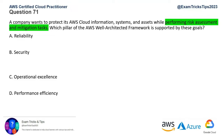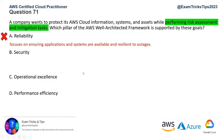Let's go through each option one by one. The first one, reliability - this focuses on ensuring applications and systems are available and resilient to outages. This pillar is all about if your application goes down, how it will come back. Do you have resiliency? Do you have redundancy? Is it deployed across multiple regions? That's not what is being asked here - we need risk assessment and mitigation. So let's eliminate that.